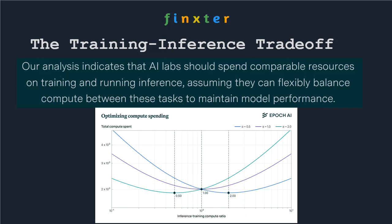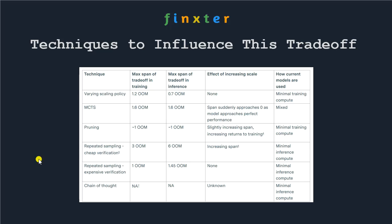There are many ways of trading inference compute against training compute. We can spend more on training in order to reduce the inference compute. Think of it like a knob or a lever that we can pull in one direction or the other.